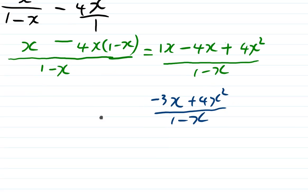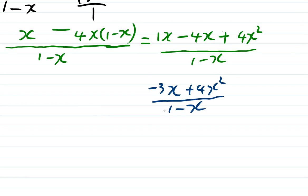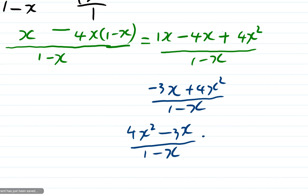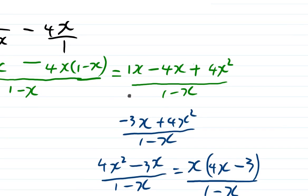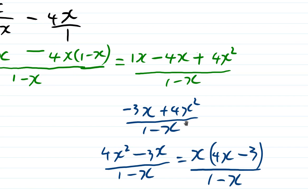Let's rewrite this, putting 4x squared to the left and minus 3x to the right, over (1 minus x). You'll find a common factor — the common factor is x. So put x outside the bracket. Open bracket: x into 4x squared goes 4x, minus x into 3x goes 3, divided by (1 minus x). That gives x(4x minus 3) divided by (1 minus x).